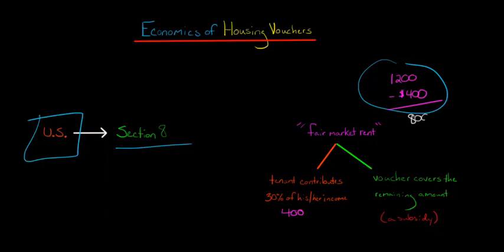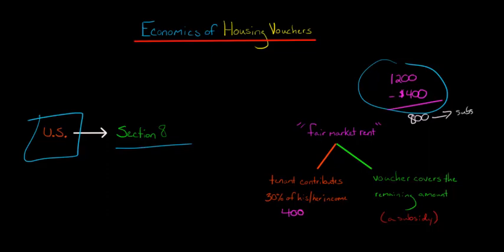There's going to be $800 left that the tenant can't afford. And the Section 8 housing voucher is going to cover the remaining amount. So that $800 is going to be a subsidy — a subsidy from the federal government. So $400 comes from the tenant, and $800 comes from a subsidy. That's how housing vouchers work, at least in the US.